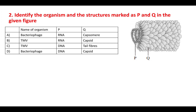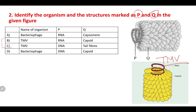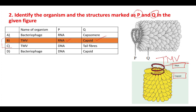Second question: identify the organism and the structures marked as P and Q. By looking at the diagram only, we can say it is Tobacco Mosaic Virus or TMV. P refers to the genetic material RNA, and Q refers to the capsid. So P = RNA and Q = capsid, which is seen in option B. Option B is the right answer.